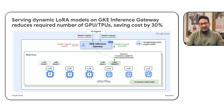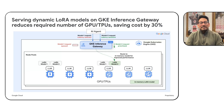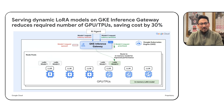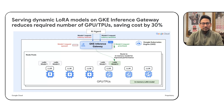Different workloads have different performance considerations — chatbots are very sensitive to serving latency and time to first token output, while a reasoning model might be more sensitive to token generation throughput versus latency. GKE Inference Gateway is able to serve based on the unique performance requirements of every single model and workload. For example, you can designate chatbot models as higher priority than a reasoning model or a batch workload, and the gateway will preferentially route traffic to ensure the right user experience across multiple families of models.